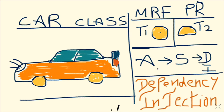How do we know what we call dependency injection? We talk about objects and classes. A class is first. In a class, there are properties and methods. The properties are class variables. The methods are class functions.